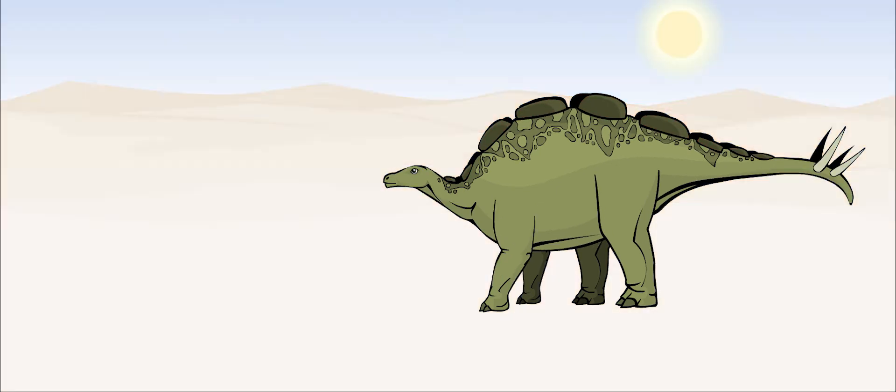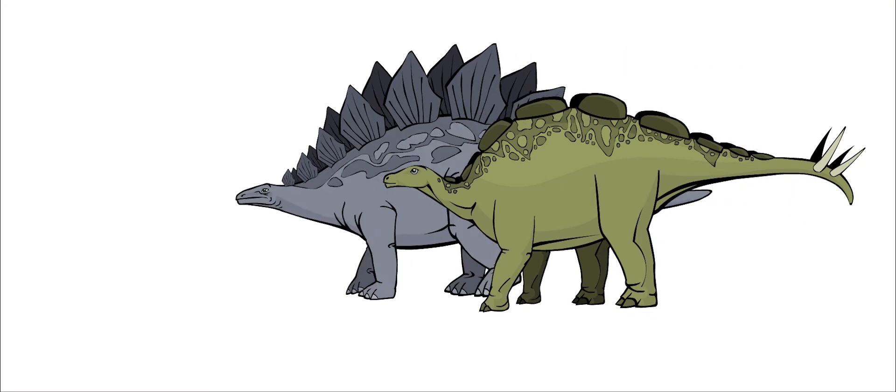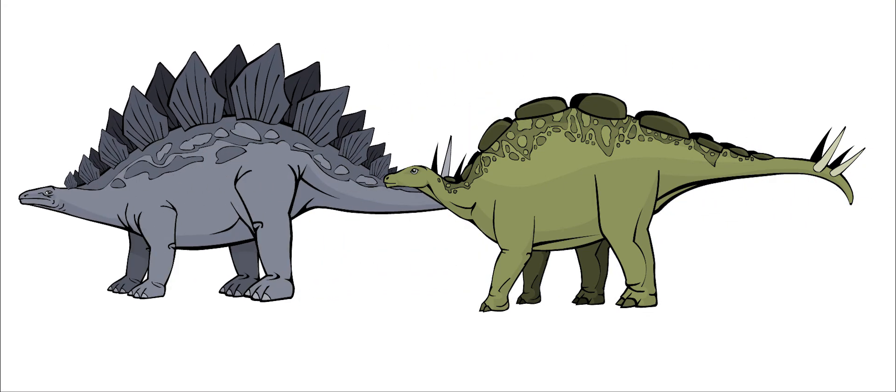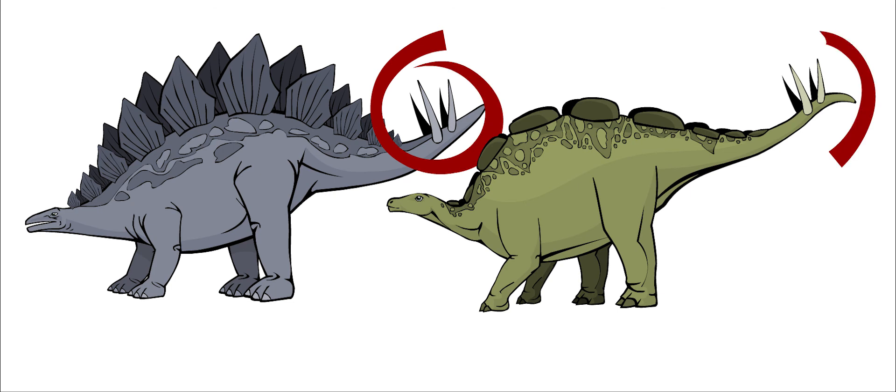Werosaurus had a shorter body and wider hips than other stegosaurs. But like all the others, it had four sharp spikes at the tip of its tail.